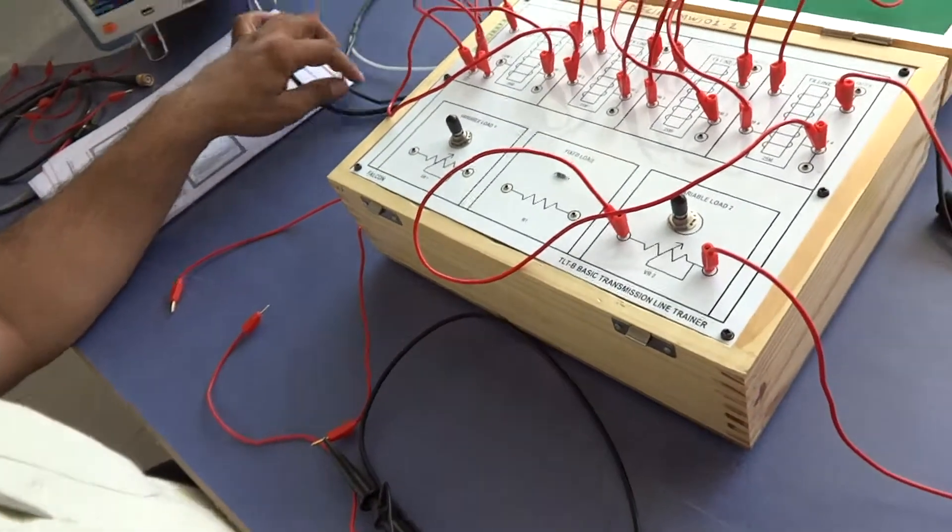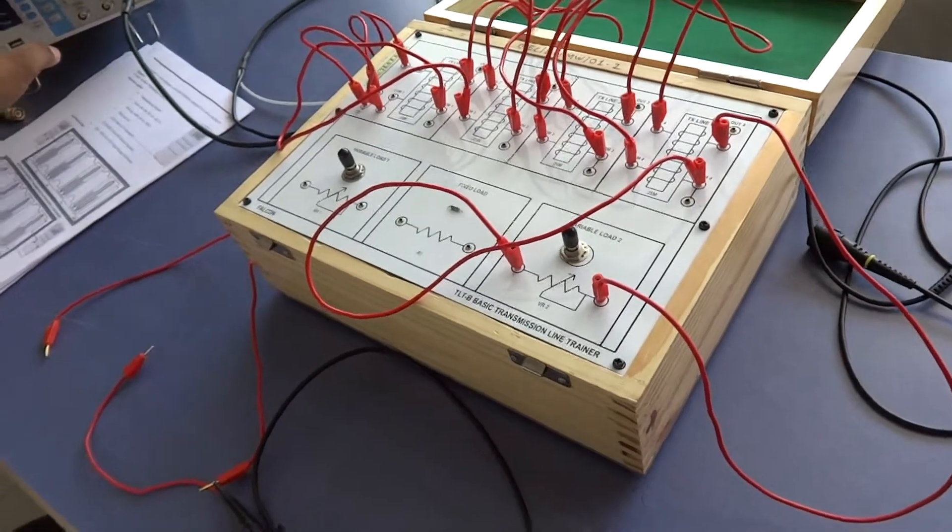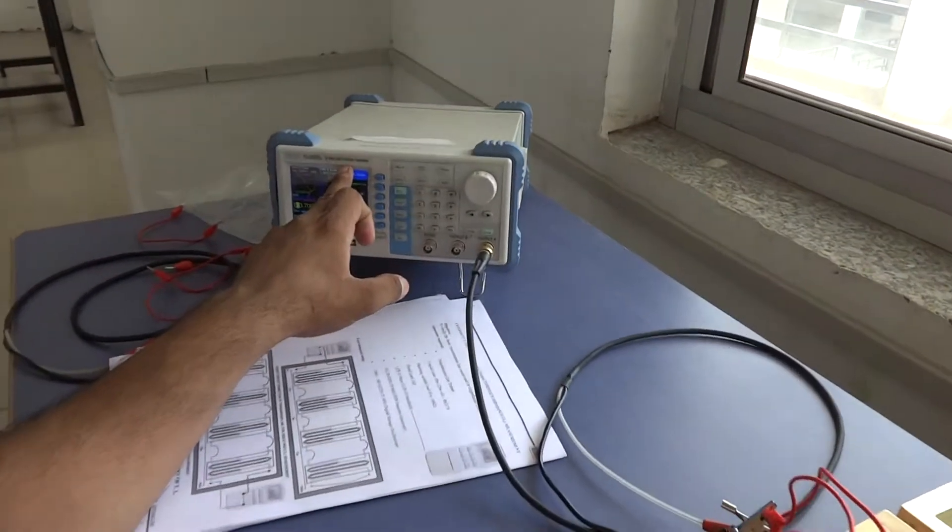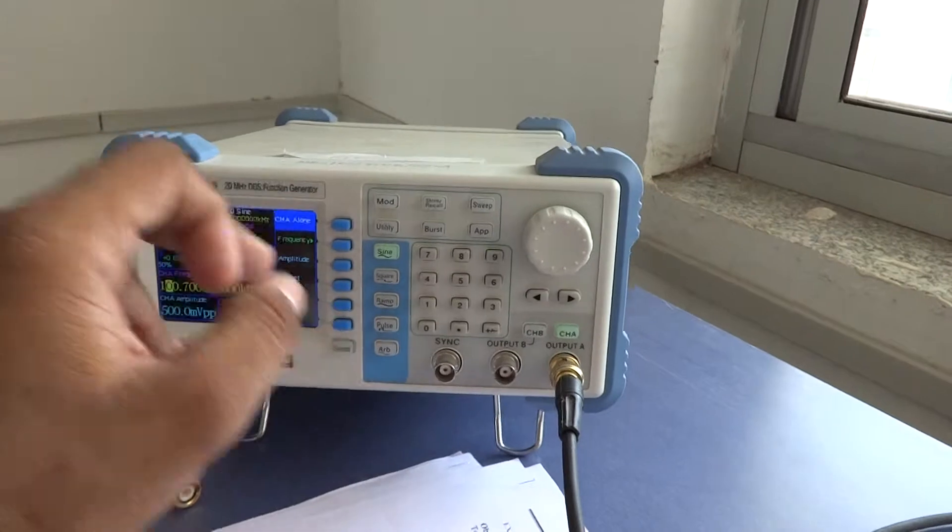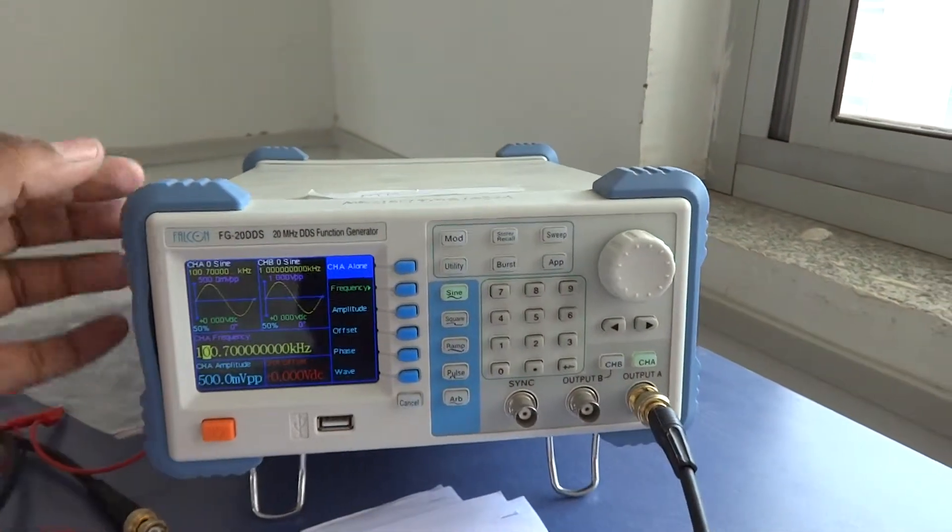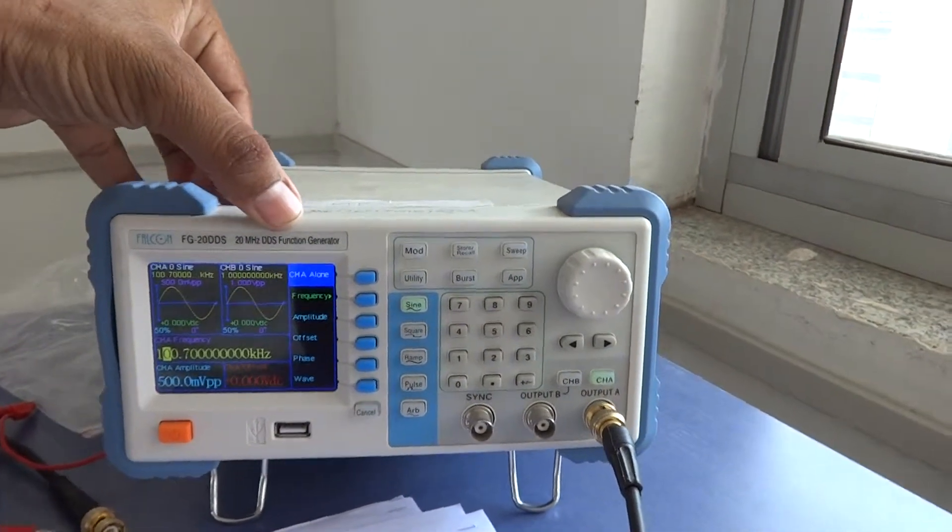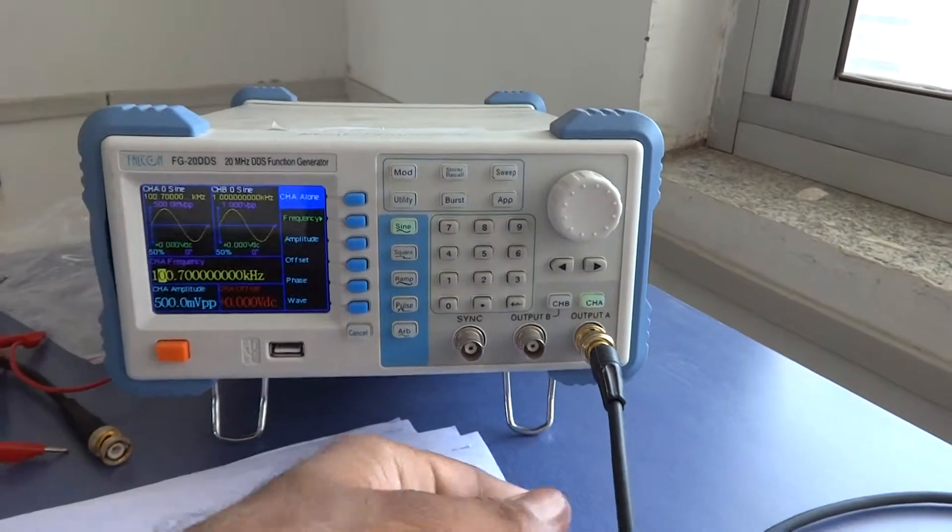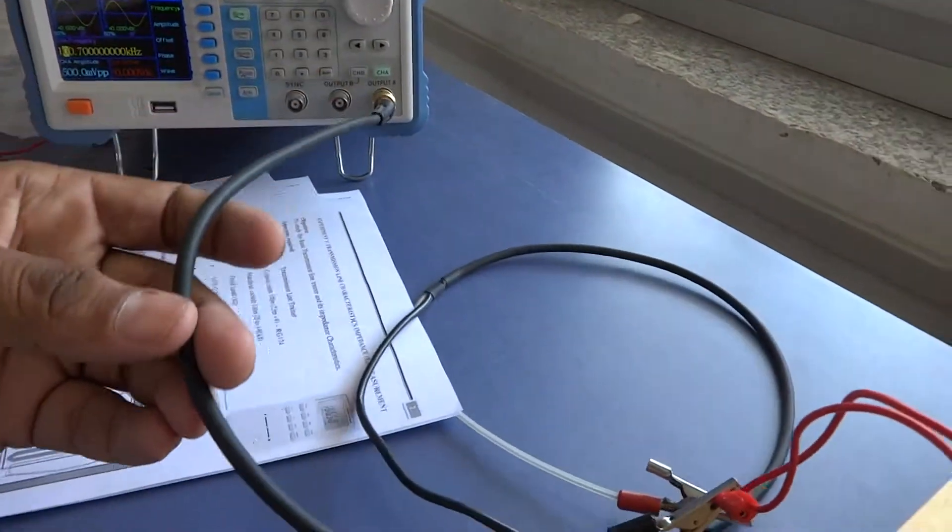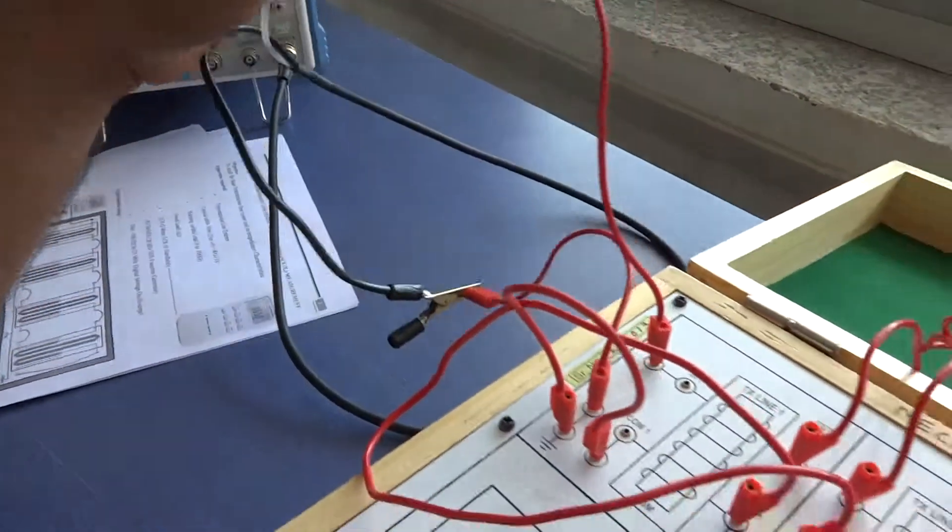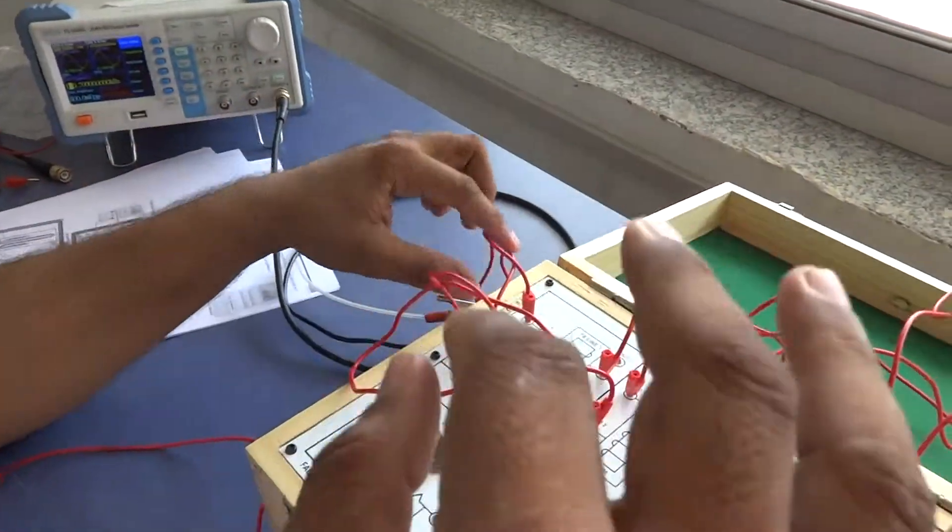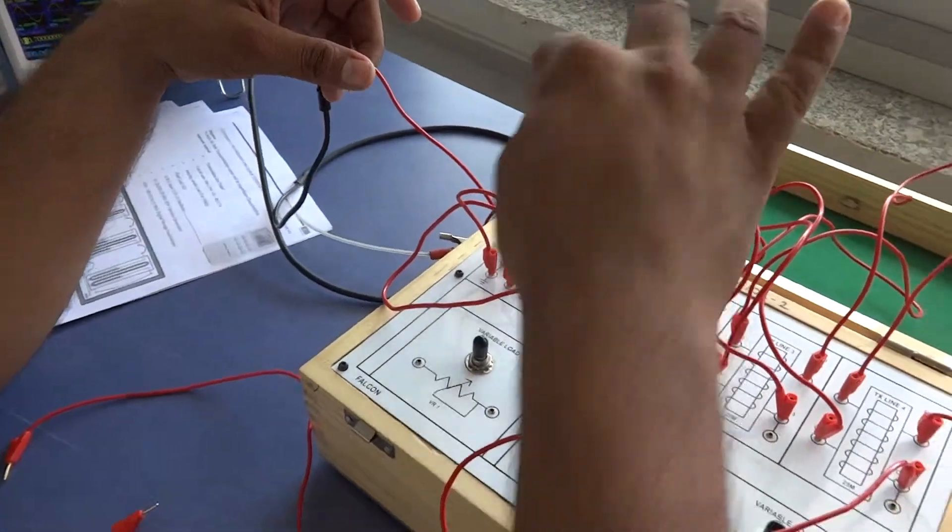As shown in the circuit, this is a 20 MHz DDS Arbitrary Function Generator. Its power cable is connected to positive input and ground input.